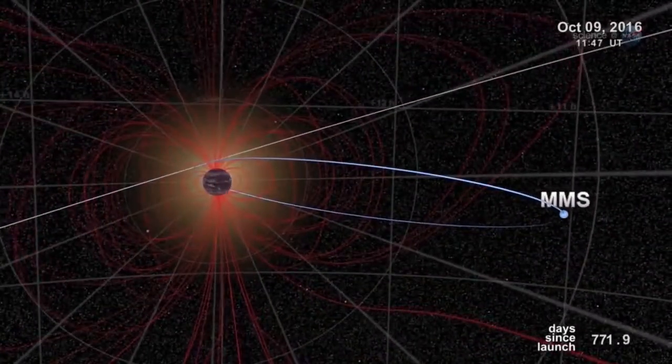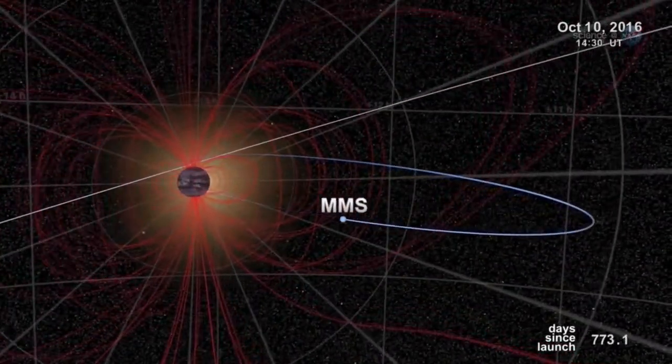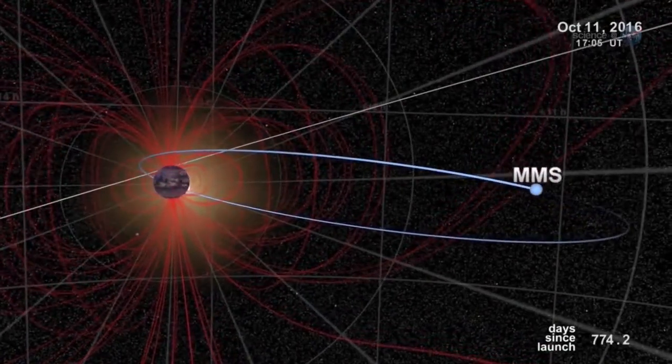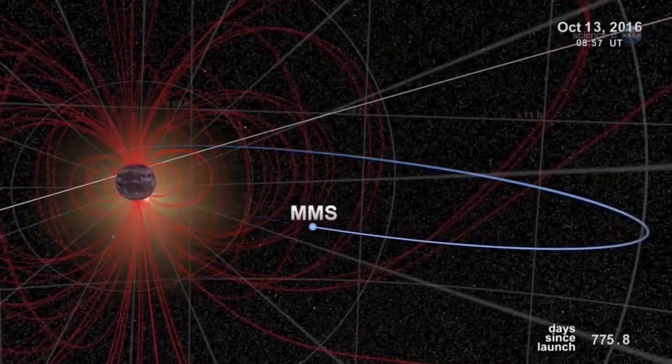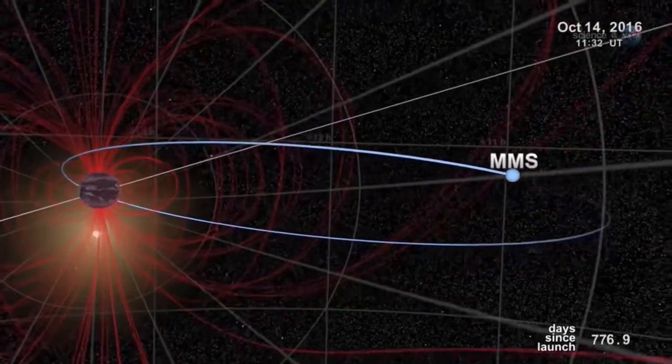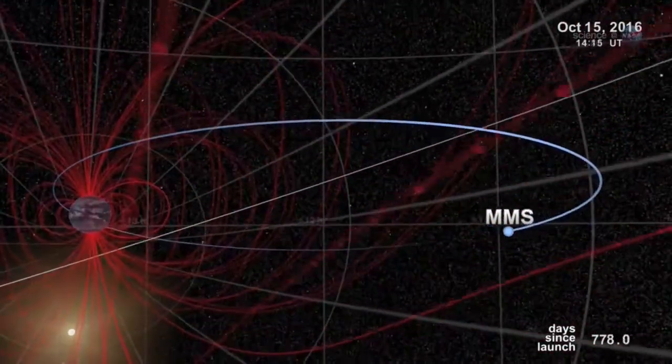Just one problem. Finding them. Magnetic portals are invisible, unstable, and elusive. They open and close without warning. And there are no signposts to guide us in, notes Scudder.